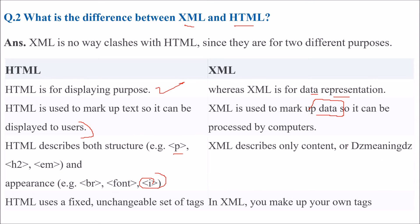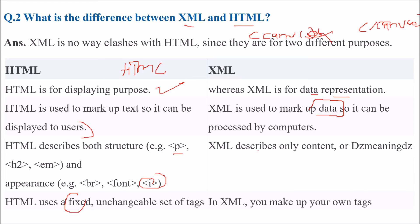XML describes only content, or you can say the meaning. HTML uses a fixed, unchangeable set of tags — you cannot change HTML tags. If HTML5 tells you to use a canvas tag, there is no other way. But in XML you can make up your own tags. XML can be written on the basis of certain DTDs and the background structure which has been defined for XML.